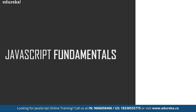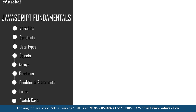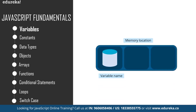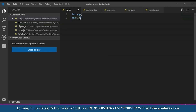Now let's cover some basic fundamentals of JavaScript. These include variables, constants, data types, objects, arrays, functions, conditional statements, loops, and switch case. A variable is a name given to a memory location which acts as a container for storing data temporarily — nothing but reserved memory locations to store values. To declare a variable in JavaScript, we use the let keyword. For example, you can write 'let h;' with a semicolon and then provide the value for that variable.